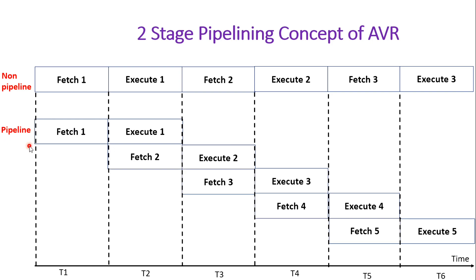Comparing non-pipeline with pipeline architecture: in pipeline, two tasks are performed simultaneously due to parallel architecture. In non-pipelining there is fetch, then a gap before execution, so there is one idle cycle between each execution. But in pipelining, after the first T-state, every T-state produces the execution of a new instruction. The latency of this two-stage pipelining architecture is two clock cycles — meaning after two clock cycles the first instruction is fully executed.